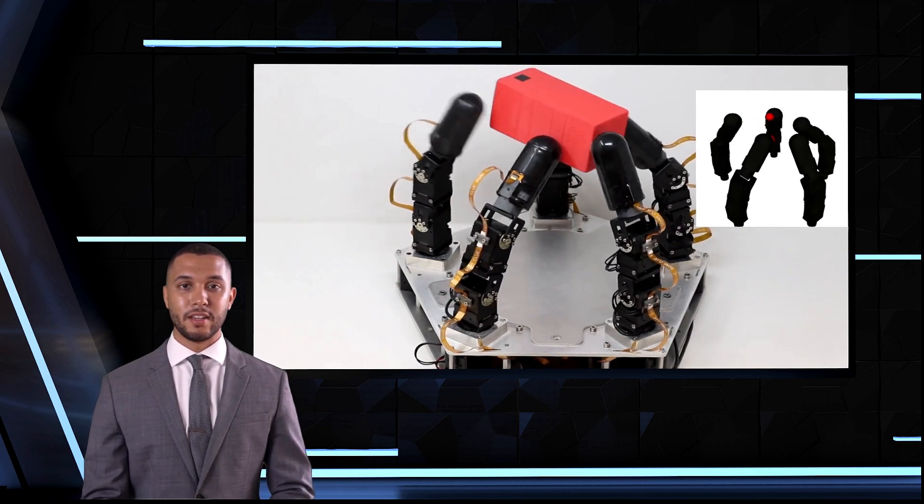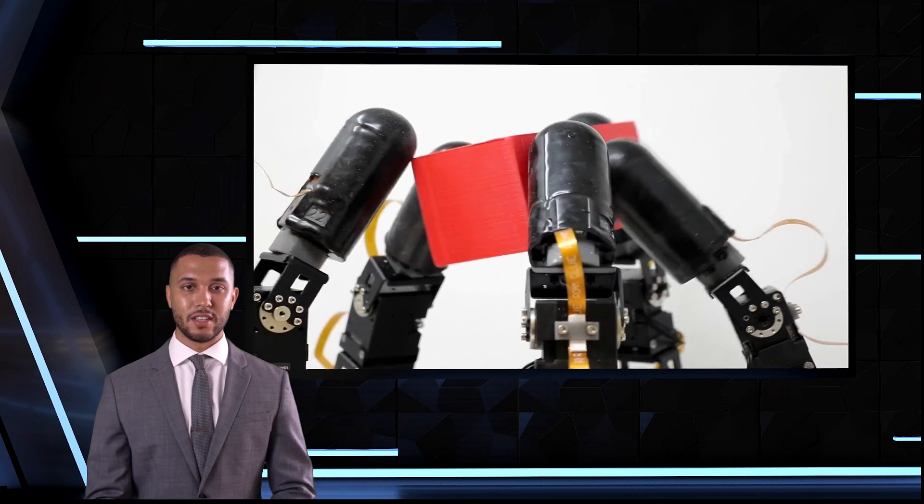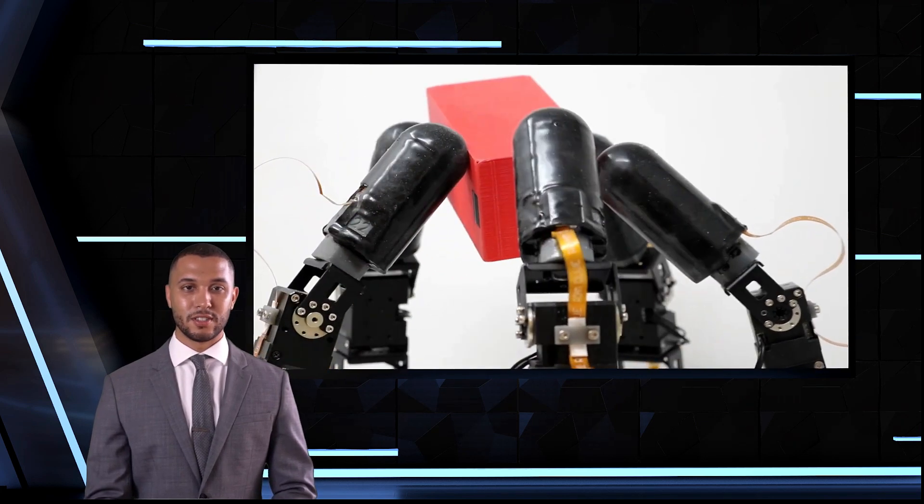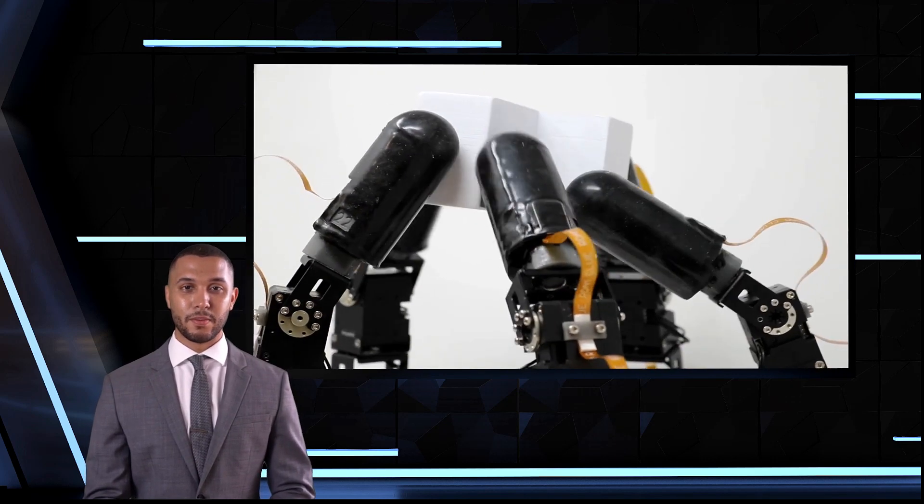This means that the robot can manipulate objects in any orientation and can adapt to changes in the environment. One of the challenges of sensorimotor robot control is actively using sensor readings to modify robot actions.